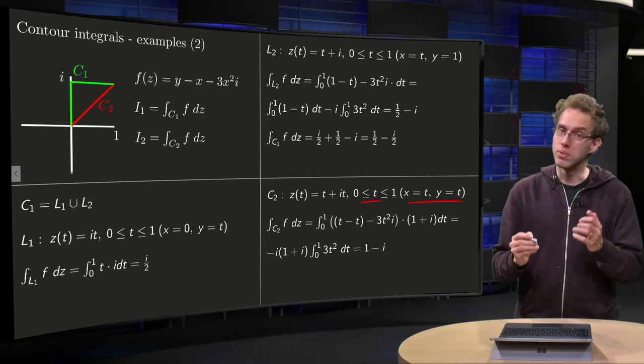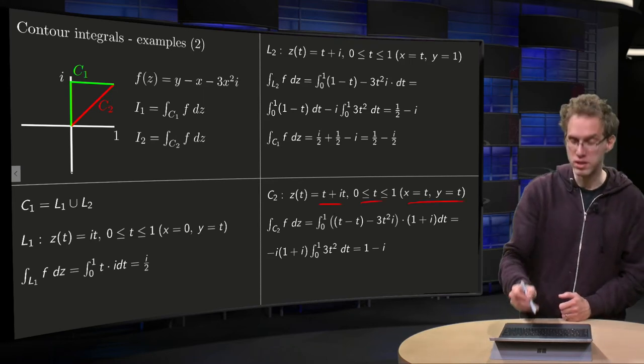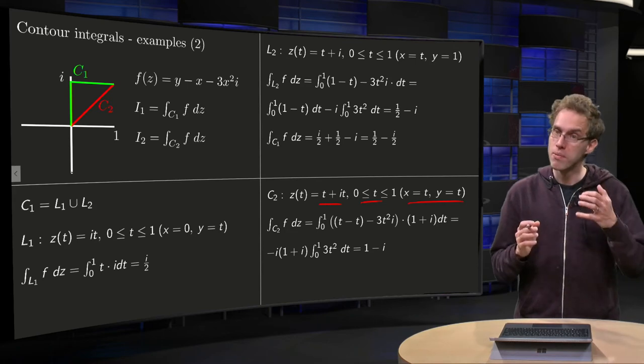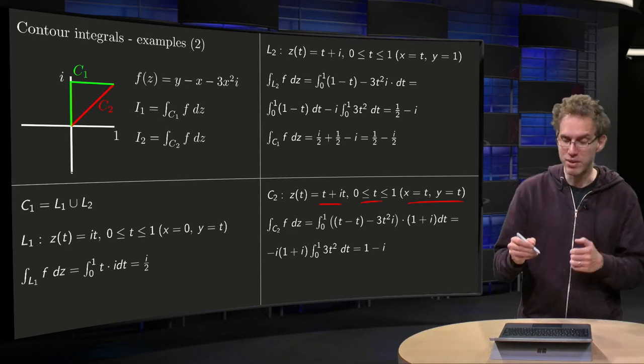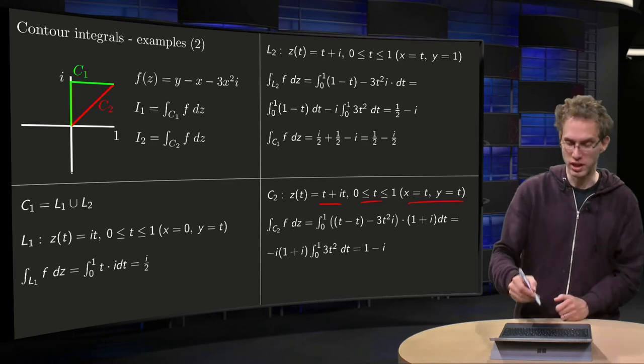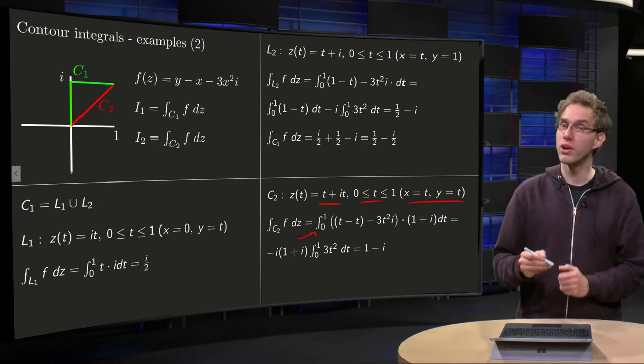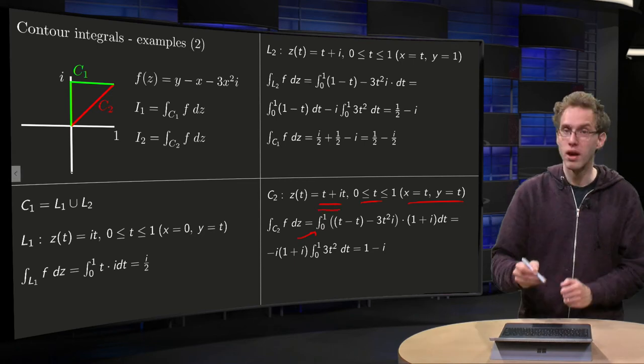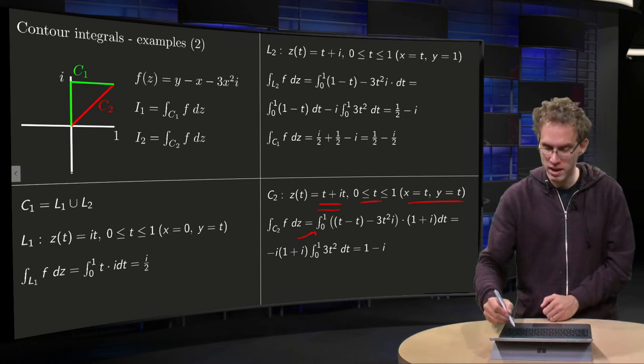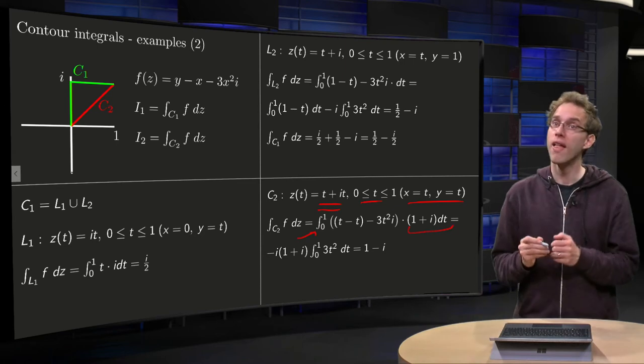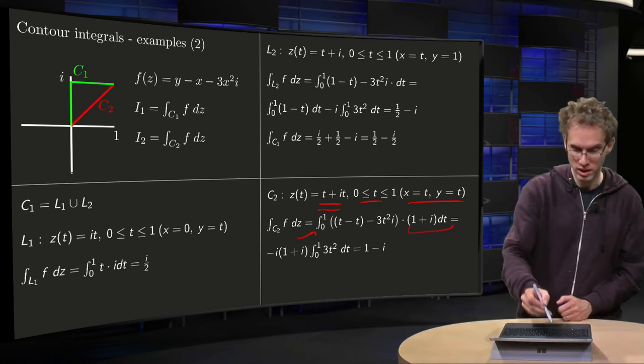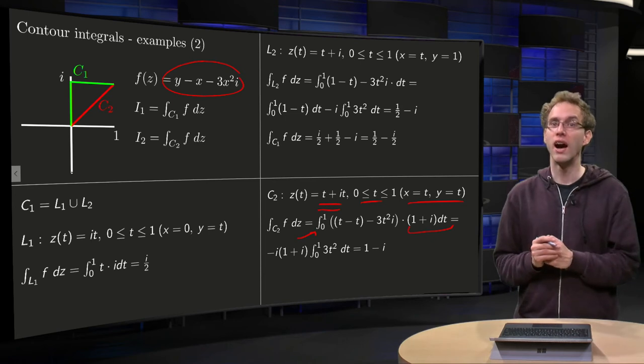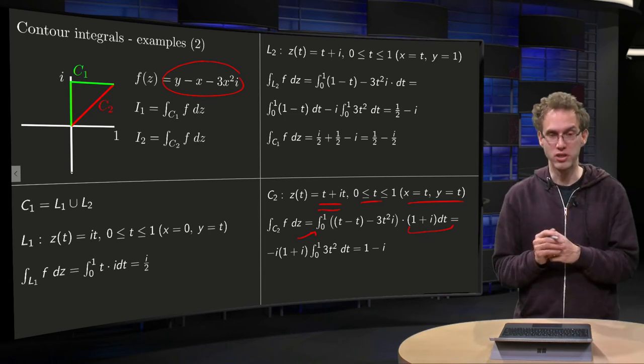Like this. So that means that for our z we get t plus i times t. What do we get for our integral? Well again, we chose our parametrization such that t runs between 0 and 1, and the dz now becomes dt times 1 plus i, so that's this part over here. And then we have to plug in x equals t and y equals t into our function over here, and that's nice because the real part cancels out.